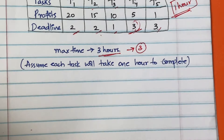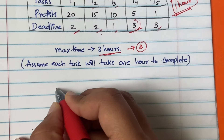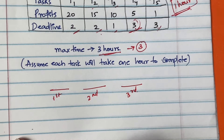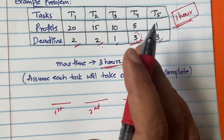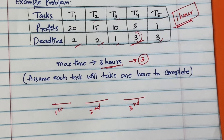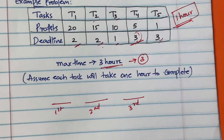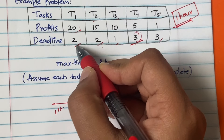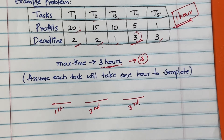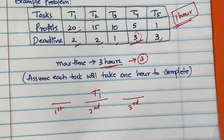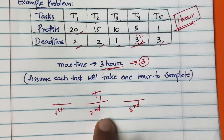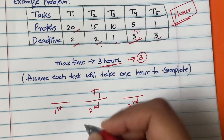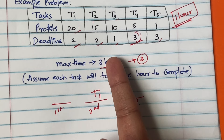We have three time slots: the first hour, the second hour, and the third hour. First, pick the task with the highest profit — that is t1 with 20 units of profit — and its deadline is two hours. Since it is ready to wait for two hours, place it in the second slot. This leaves room for another task in the first slot in case something has a tighter deadline.